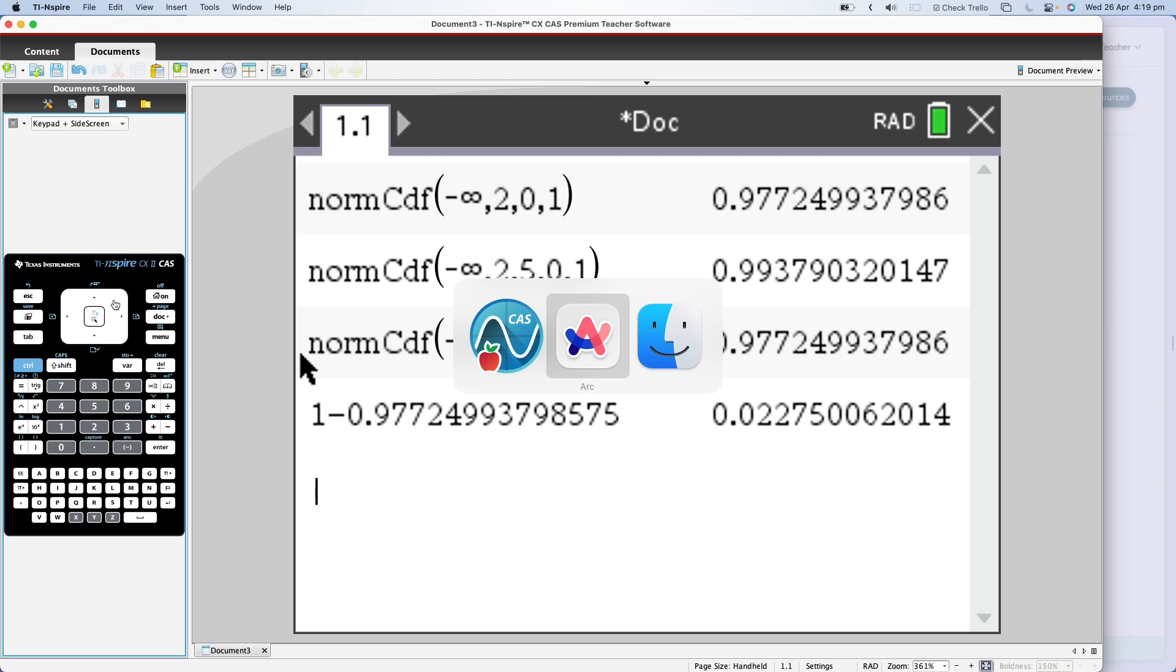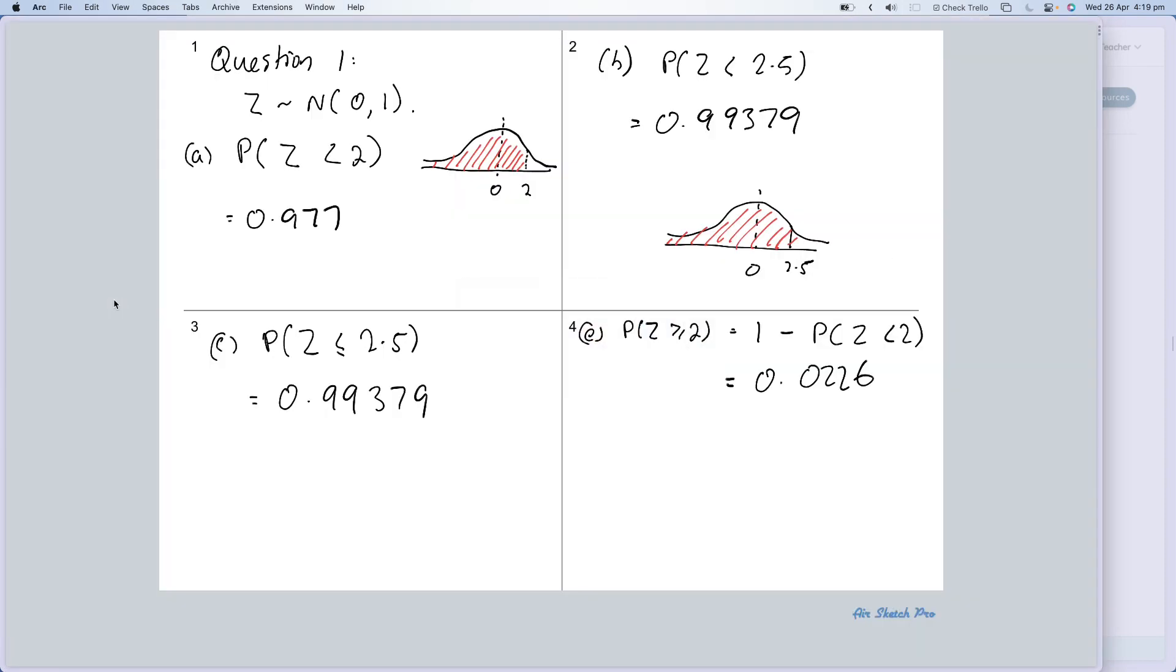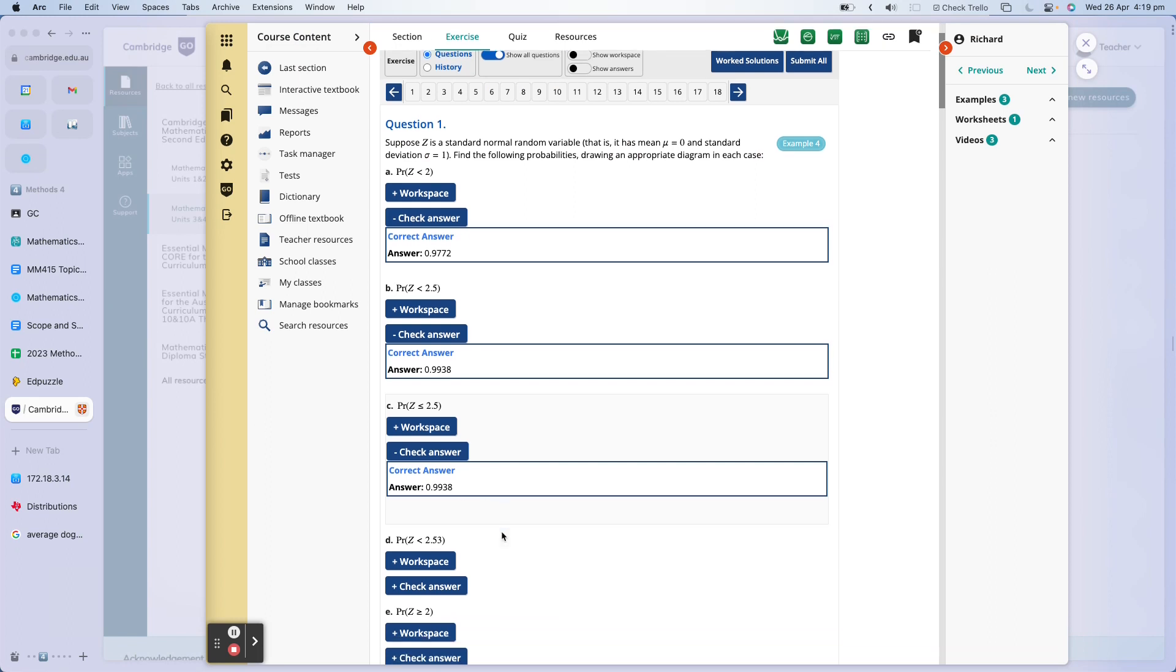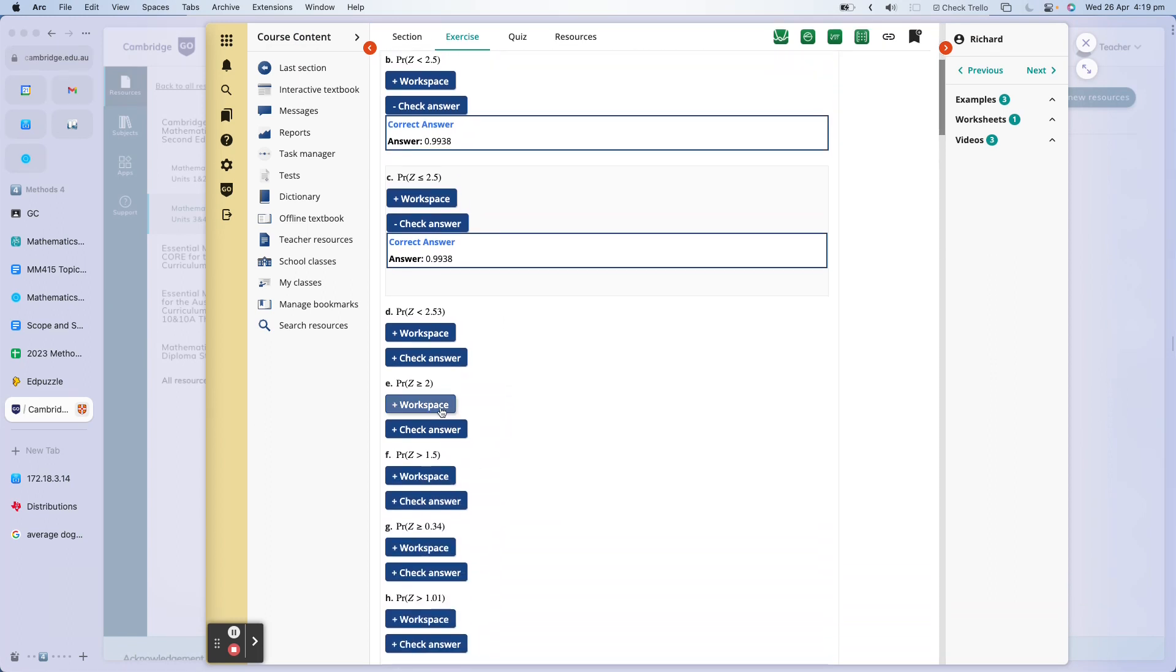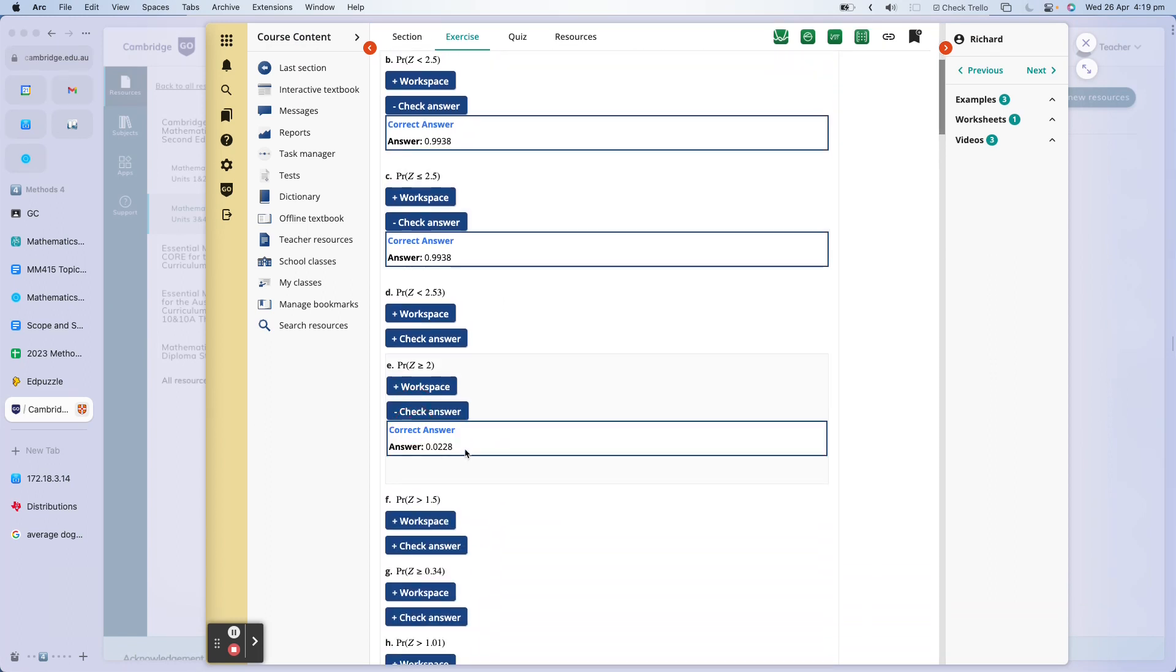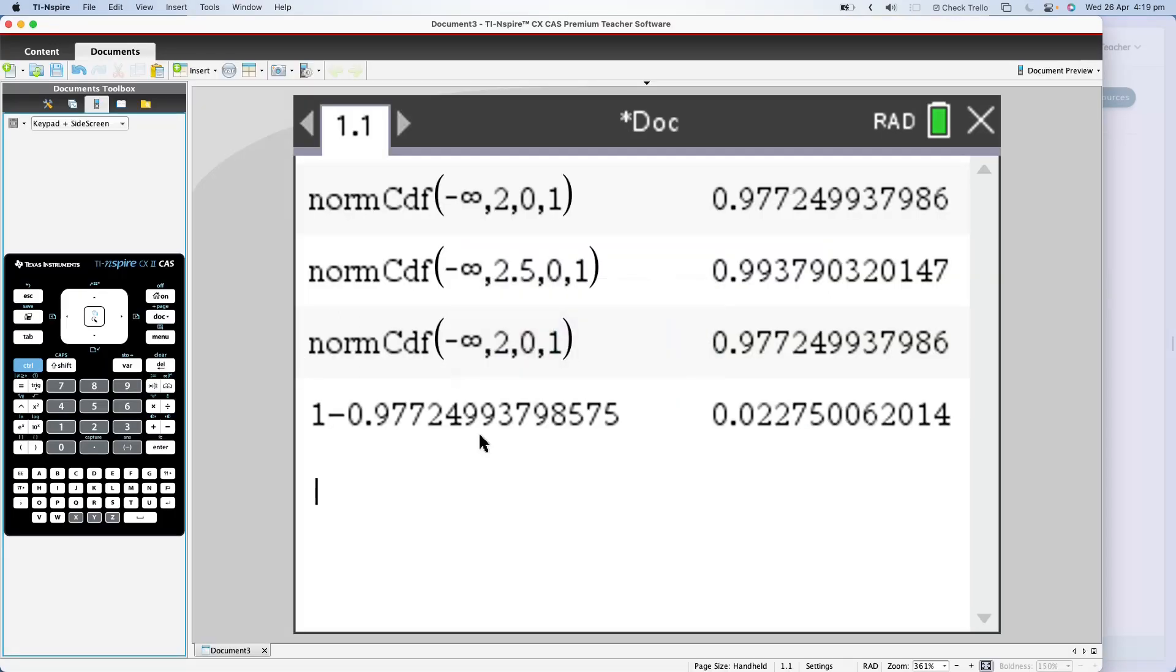There we go, 0.0226. If I go back to my answers here and look at the answer for E, you'll see I've got 0.0228. I didn't quite write that down properly. Yeah, 0.0228. I accidentally wrote 6 down, but I don't know why.